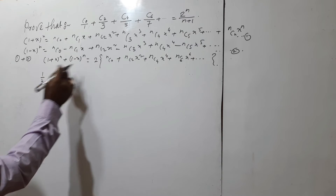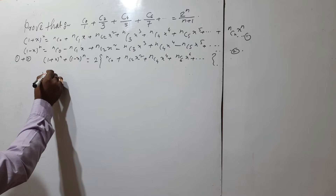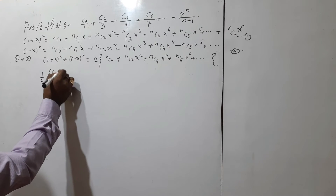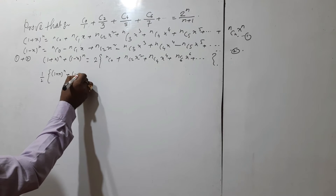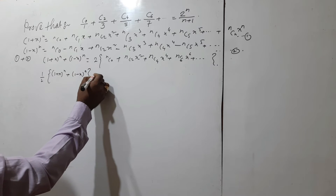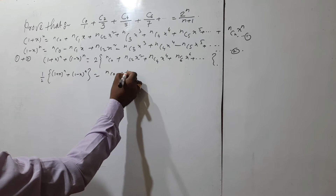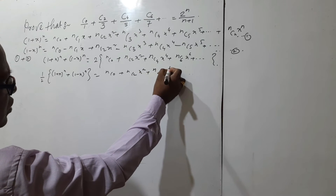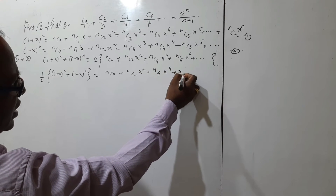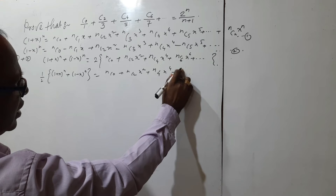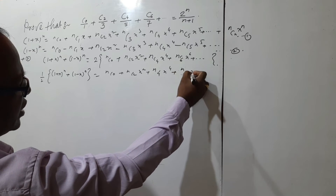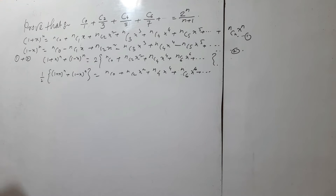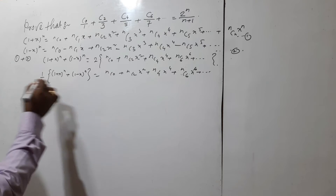Dividing both sides by 2, we get: [(1+x)^n plus (1-x)^n] / 2 equals nC0 plus nC2·x² plus nC4·x⁴ plus nC6·x⁶ plus … Now integrating both sides.